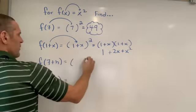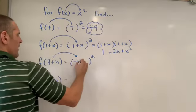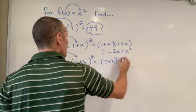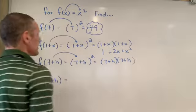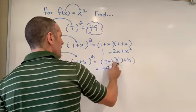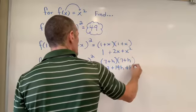f of 7 plus h, we are told to take our input and square it, and our input is 7 plus h. And again, we're going to want to foil this, because our rule says take your input and square it, which will give us, when we foil this, 49 plus 14h plus h squared.